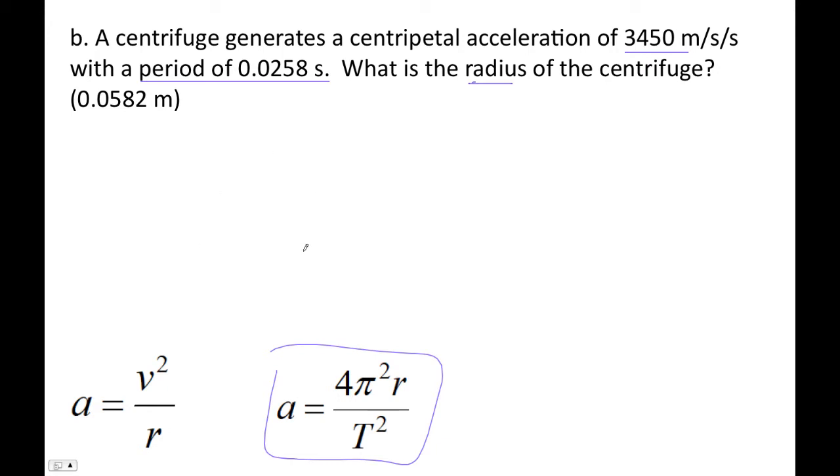So let's just set this up here. a is 4π²r over T², right?